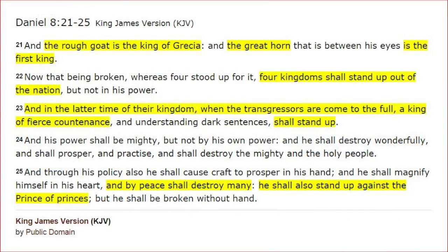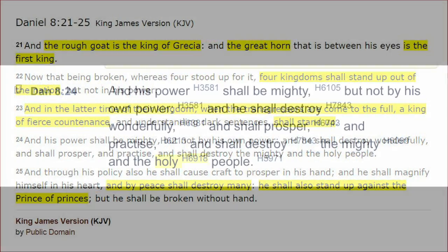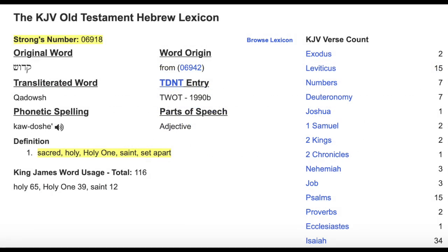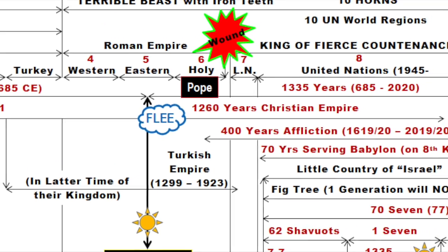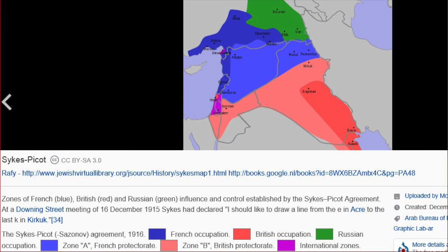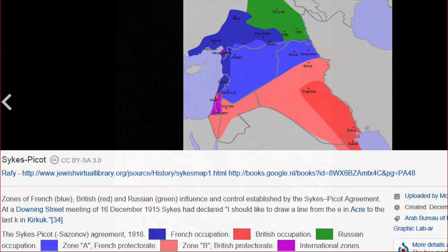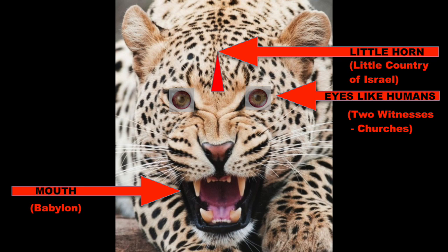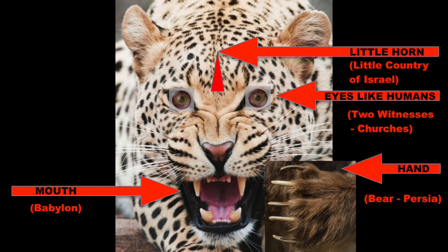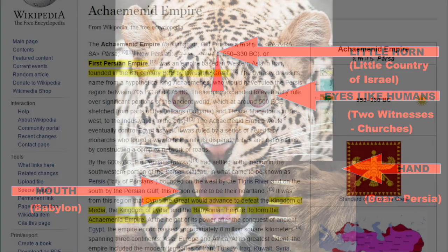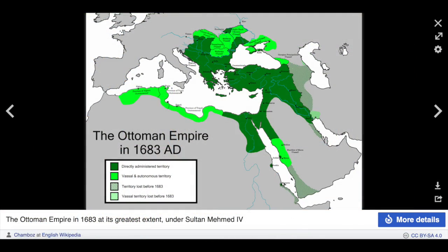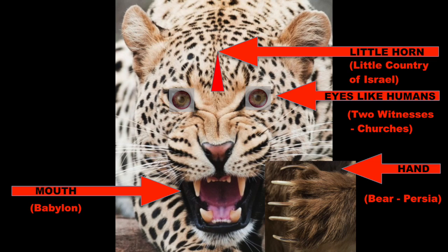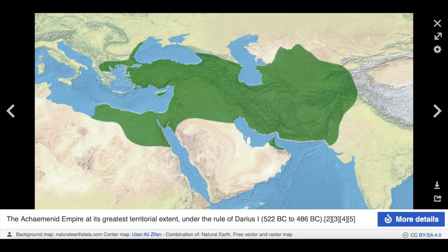Daniel 8:24 says this king will destroy the holy people — word 6918, which also means saint or set apart. This is the king that created the little horn; it is the little horn. Israel was international territory belonging to the League of Nations before it was declared a state — it is actually a UN territory. The hand is the hand of the beast, which is the paw of the bear, which is Persia. The bear — the first Persian Empire — covered the same basic area where the Turkish Empire later dominated. The hand of the little horn is the location of the Persian Empire.